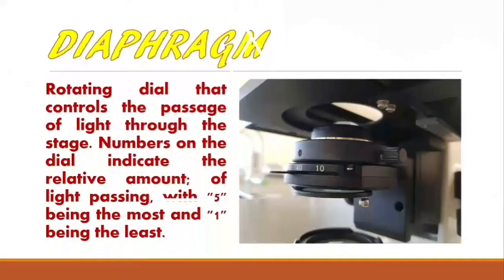Diaphragm. A rotating dial that controls the passage of light through the stage. Numbers on the dial indicate the relative amount of light passing, with 5 being the most and 1 being the least.